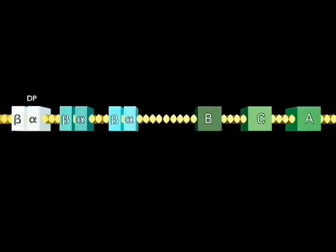The MHC gene locus contains three class II genes: DP, DQ, and DR, each formed by two chains, beta and alpha.